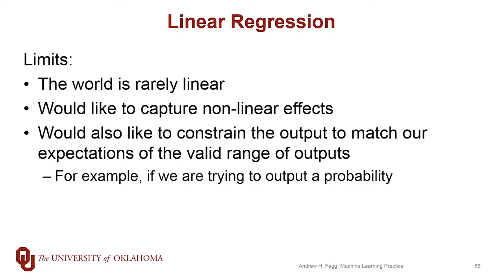One way we might want to capture these nonlinear effects is to constrain the output to match our expectations of what valid values might be. For example, if I am trying to generate an output that I'd like to interpret as a probability, it only makes sense if that value falls between zero and one. If the outputs fall outside of that range, we have no good way of interpreting those.